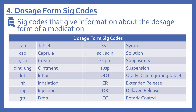Next are the dosage form SIG codes, which give information about the dosage form of a medication. TAB is tablet, CAP is capsule, CR or CRE is cream, OINT or UNG means ointment, LOT means lotion, INH is inhalation (like with an inhaler), INJ means injection, GTT means drop (like for eye drops or ear drops), SYR means syrup, SOL or SOLN means solution, SUPP is suppository, SUSP is suspension, ODT means orally disintegrating tablet, ER is extended release, DR is delayed release, and EC is enteric coated — those are others you may see with tablets or capsules.